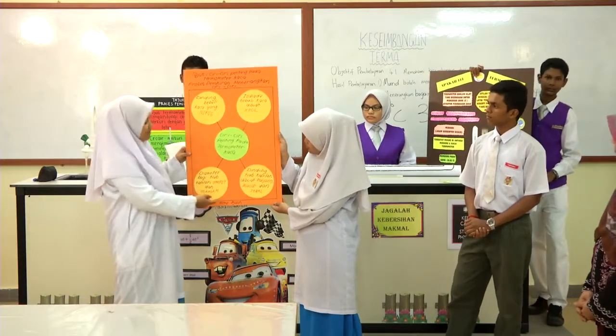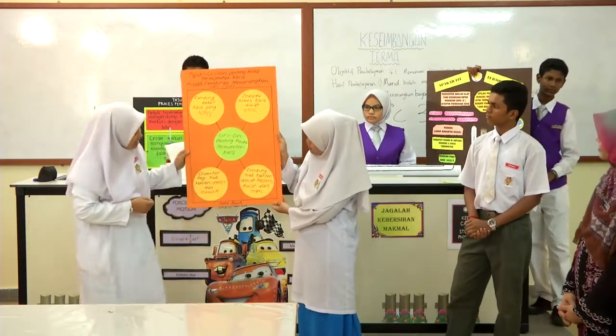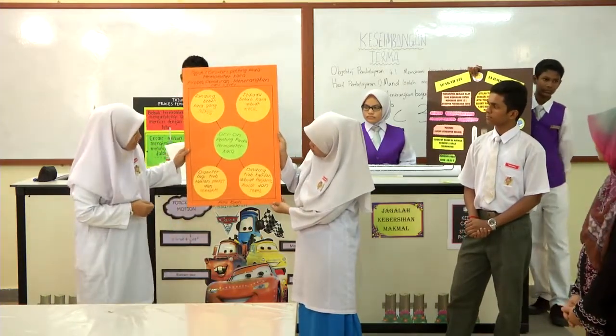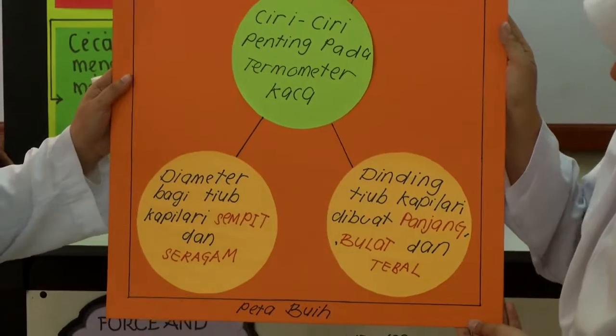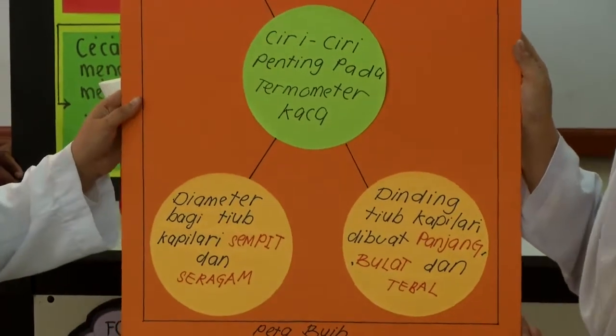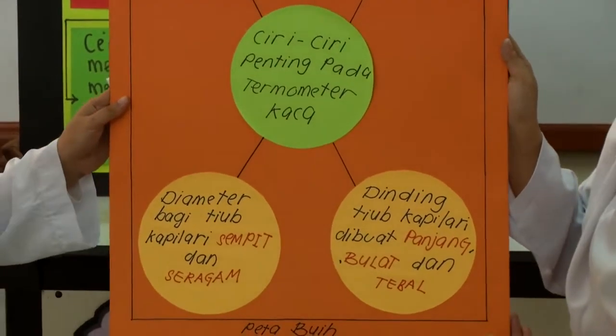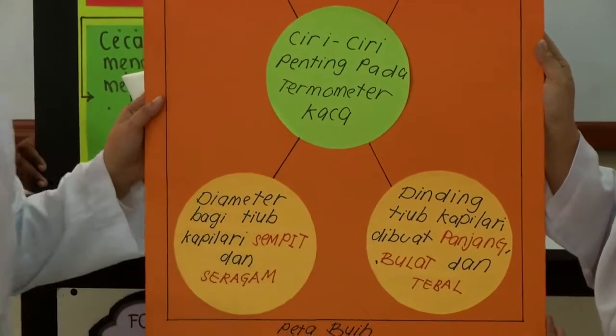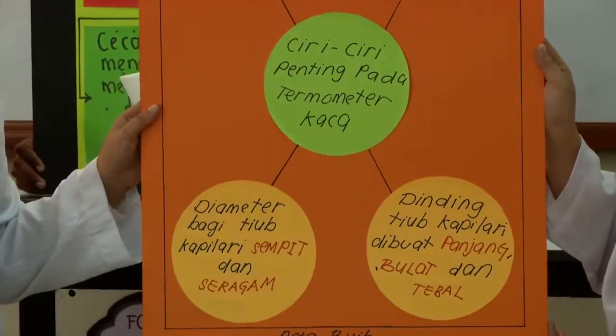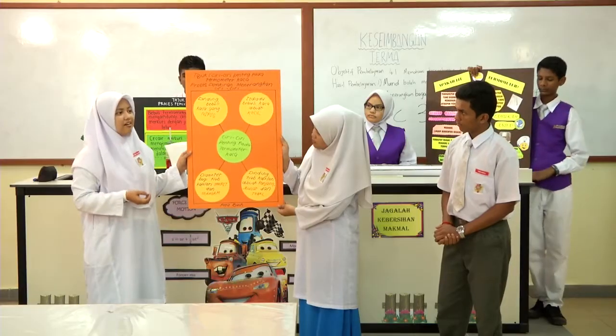Yang keempat adalah dinding tiub kapilari dibuat panjang, bulat dan tebal. Ini memberi contoh seperti kanta pembesar — memudahkan kita melihat termometer itu dengan lebih jelas.